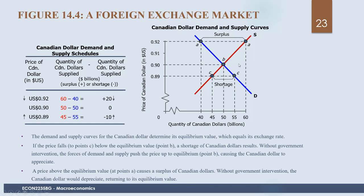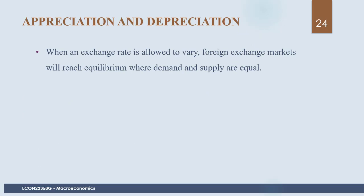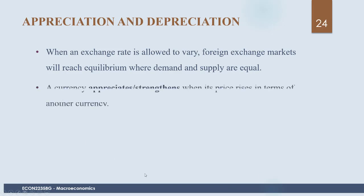The foreign exchange market is a very dynamic market where demand and supply shift constantly. The main underlying principle is that supply and demand determines the exchange rate. When an exchange rate is allowed to vary, foreign exchange markets reach equilibrium where demand and supply are equal. If the currency appreciates, it is strengthening — its price in terms of another currency is increasing. If it is depreciating, its price falls in terms of another currency.